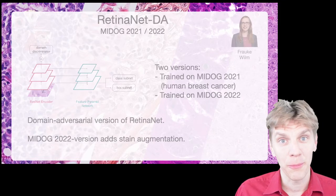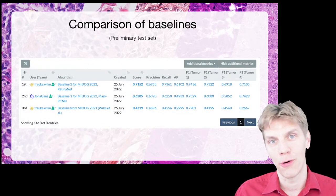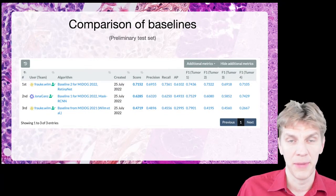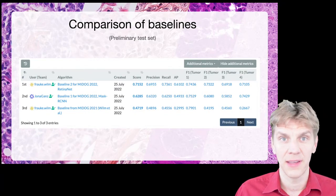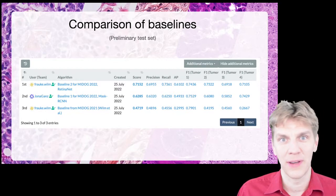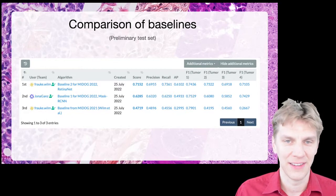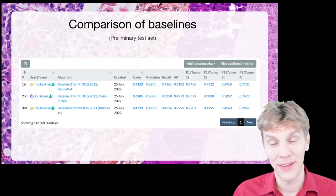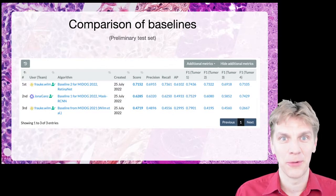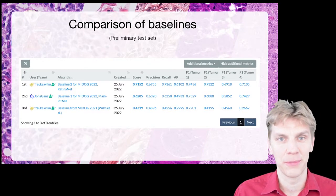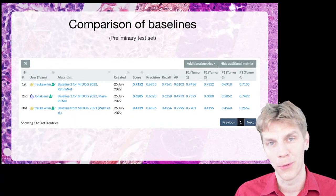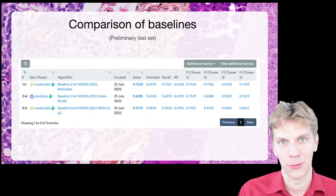If we compare the performance of all three approaches, we see that the best performing approach at the moment is the MyDoc 2022 trained RetinaNet with domain adversarial branch. This is not so surprising, at least for us, and it should give you as participants a baseline and some kind of orientation as to what will work and what will maybe not work.